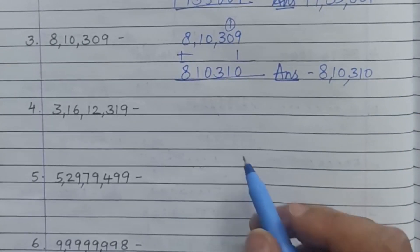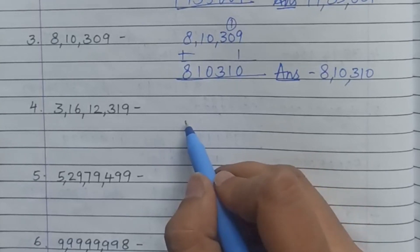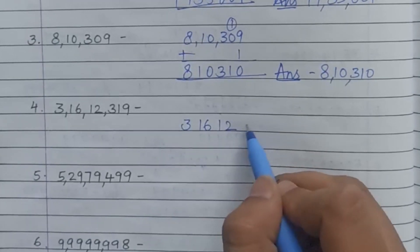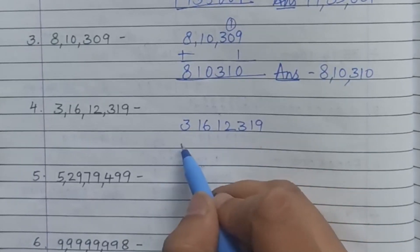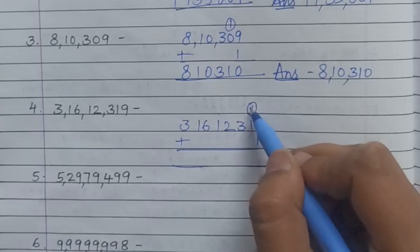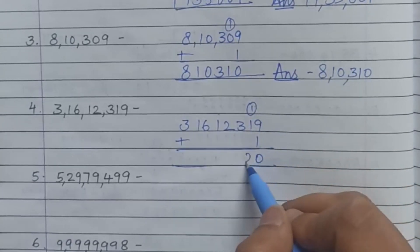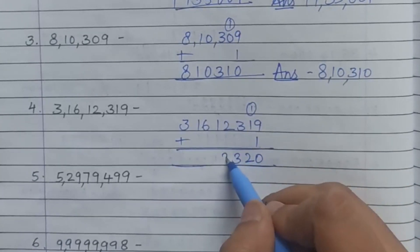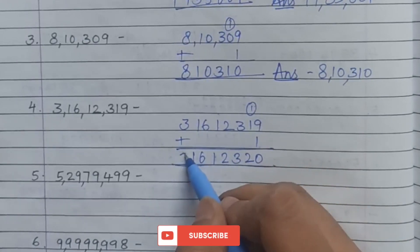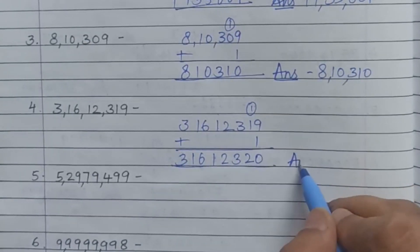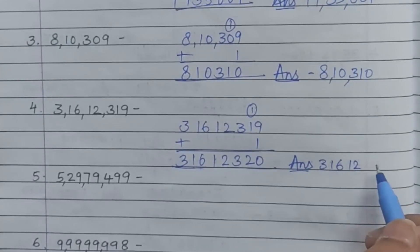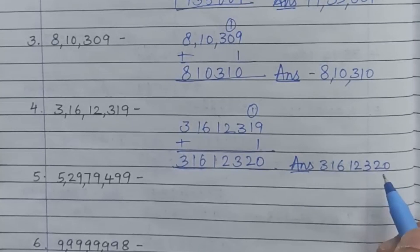Next question: 3,16,12,319. First write the question. Add 1 to this number. 9 plus 1 is 10, carry 1. 1 plus 1 is 2. Bring the next numbers down. The answer is 3,16,12,320.